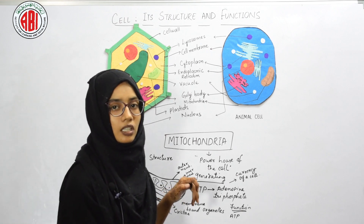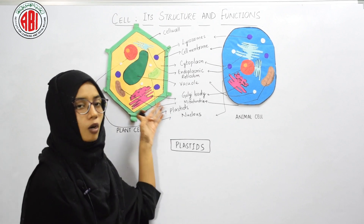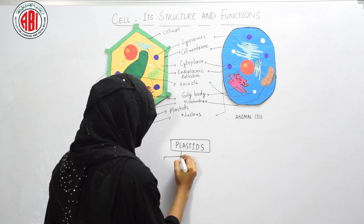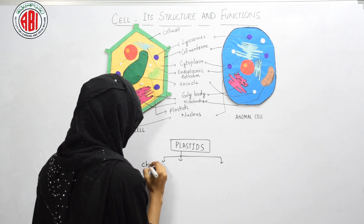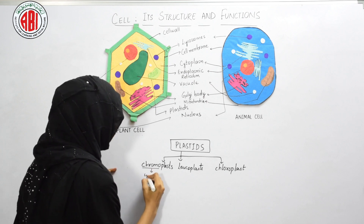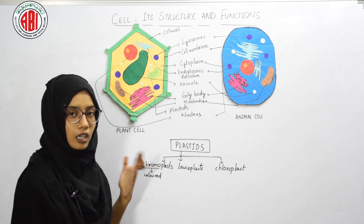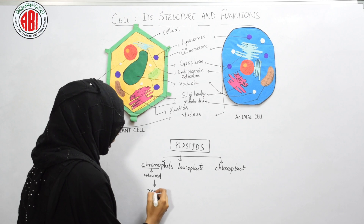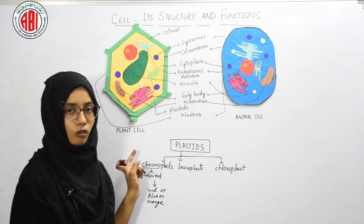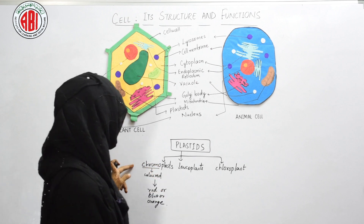Now let us see about plastids. Plastids can be found only in plant cells; they are absent in animal cells. Plastids are mainly divided into three types: chromoplasts, leukoplasts, and chloroplasts. 'Chromo' means color, so chromoplasts are plastids that are colored or impart colors like red, blue, or orange. For example, the red color of red capsicum is due to the presence of chromoplasts.